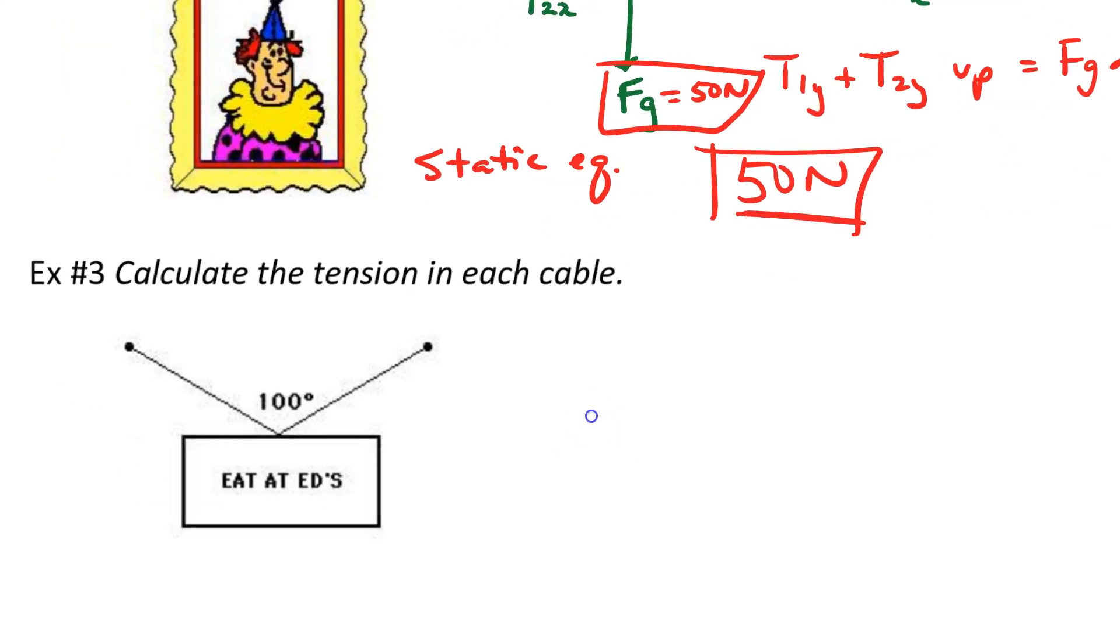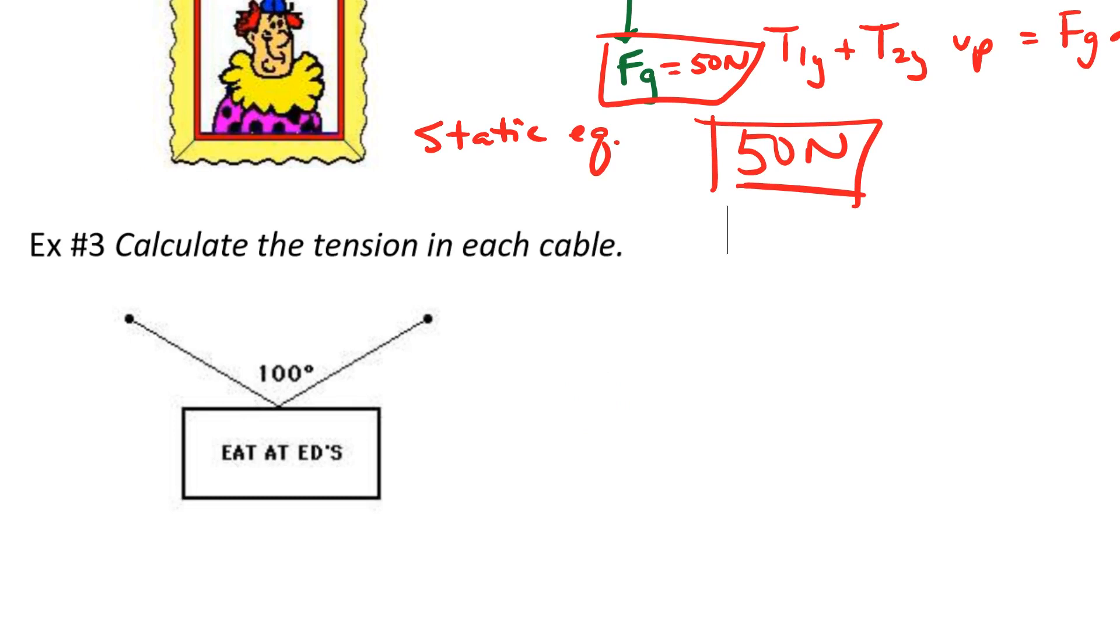Next question: calculate the tension in each cable. There's not enough information, so we're going to just make up a number here. Let's say that the mass of the sign is 10 kilograms. What do we have for forces? I'll just redraw my diagram. I'm going to have this tension force number one, this tension force number two, and I will have a force of gravity downwards. The force of gravity is the easiest one to figure out. It's going to be my mass times 9.8, so I will get 10 times 9.8, so it'll be 98 newtons.